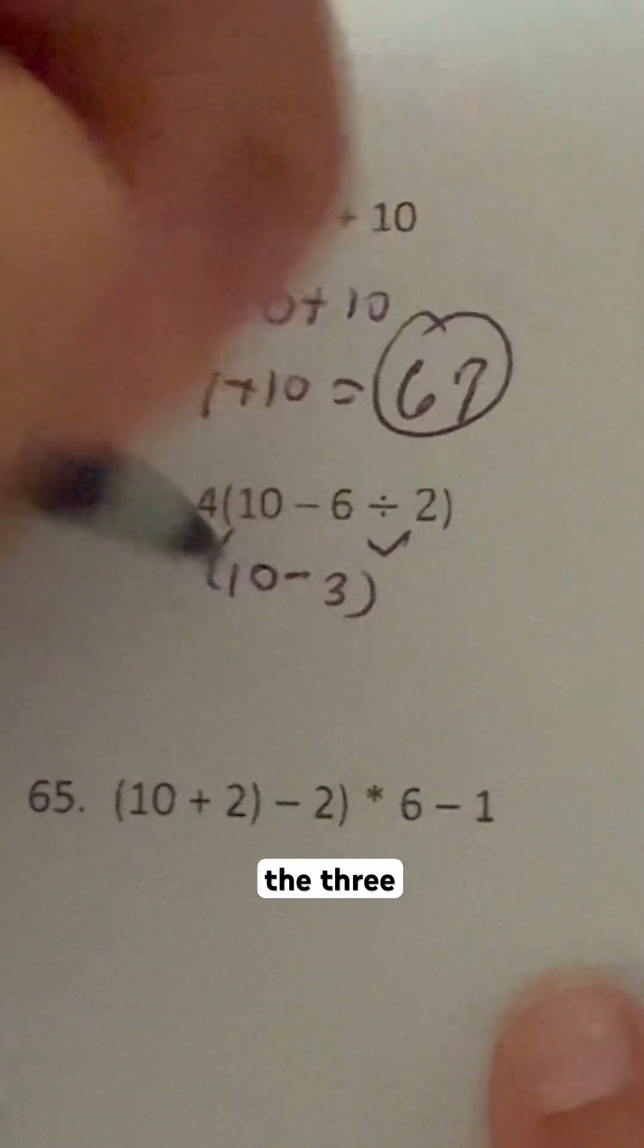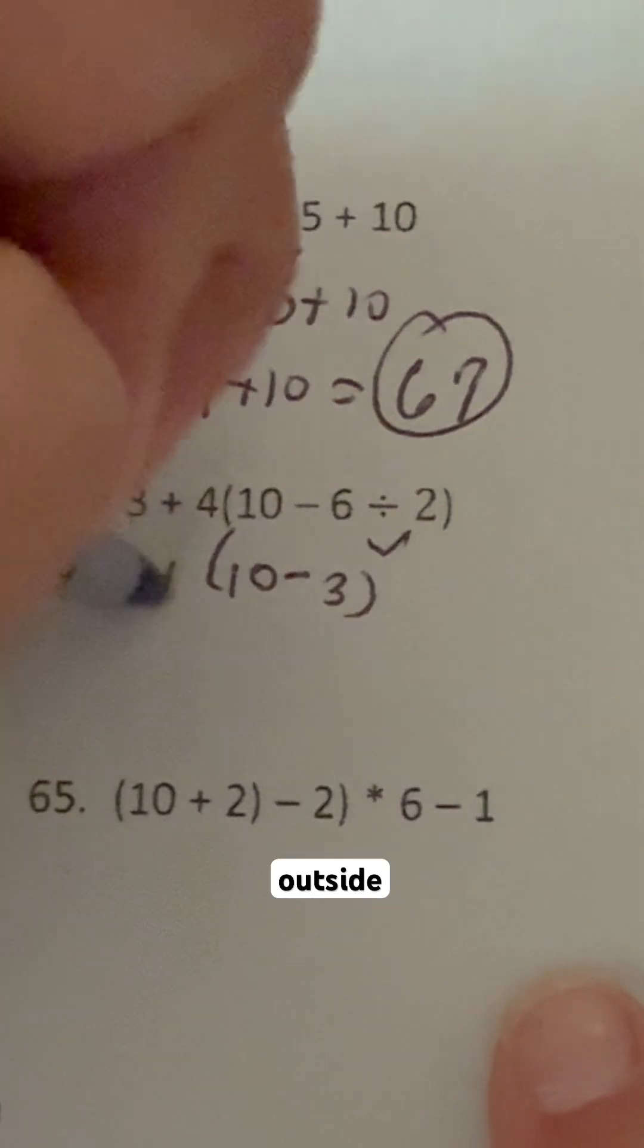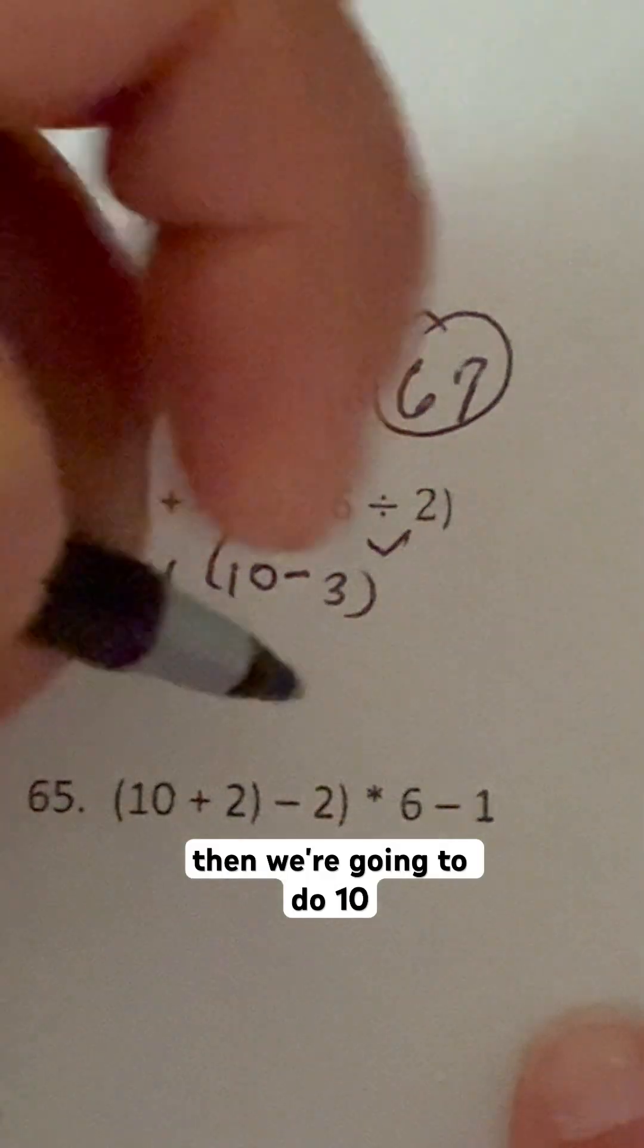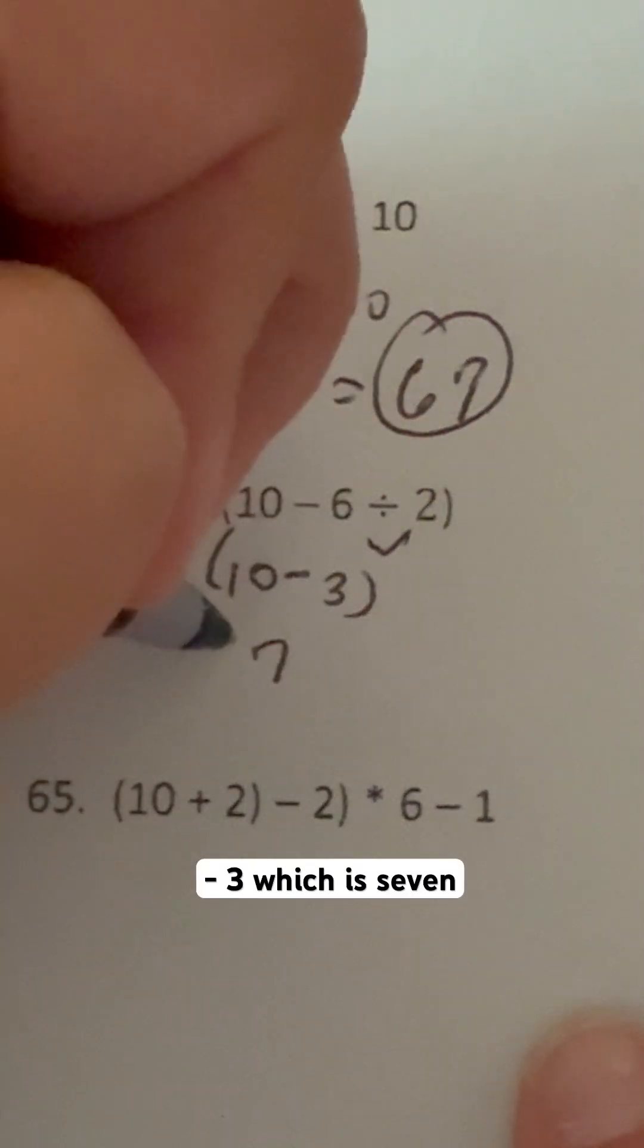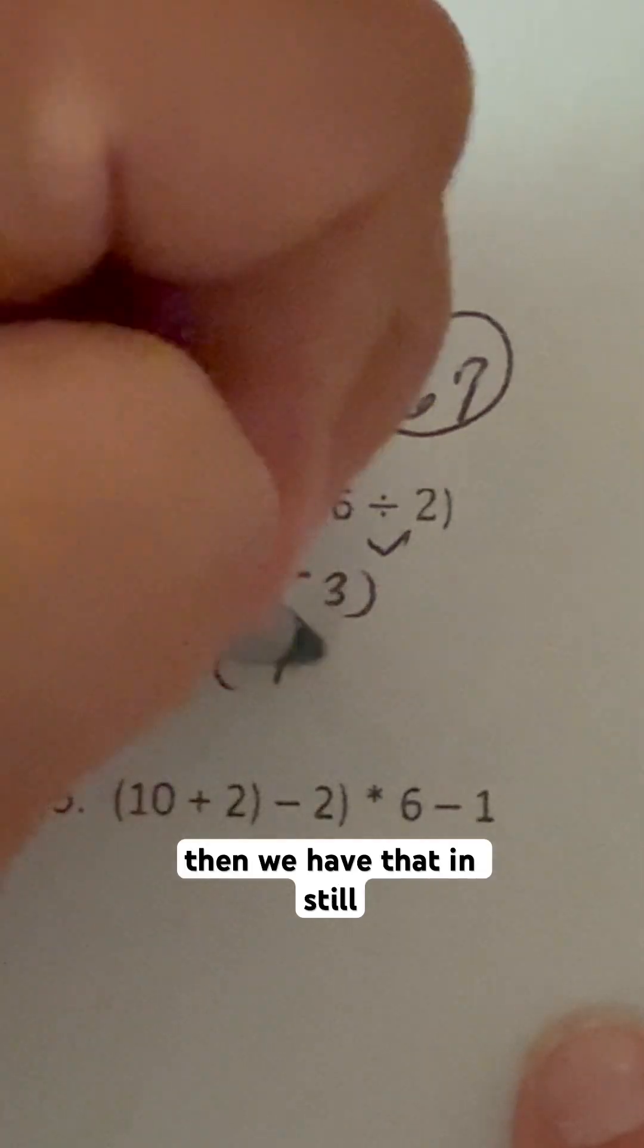So we're going to have 10 minus the 3, and then we have this outside. So then we're going to do 10 minus 3, which is 7, and then we have that still in parentheses.